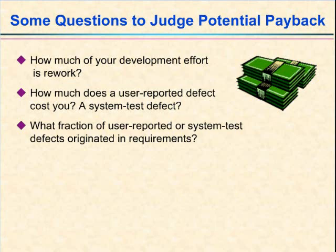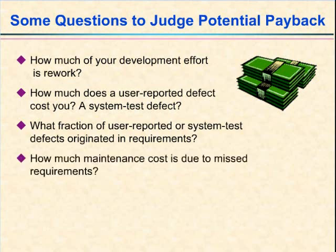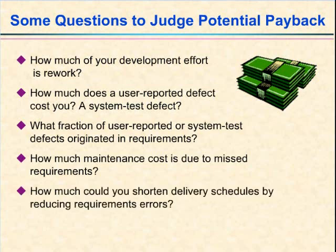Perhaps you'll learn that very few of your errors originate in the requirements, which would mean that improving your requirements doesn't give you much leverage for reducing defect costs. Without the data, you have no way of knowing for sure. You might also want to know how much of your maintenance effort is because of requirements that were overlooked during requirements development. Thinking through all these factors might give you an idea of how much your project teams could shorten their delivery schedules by reducing errors in requirements. Process improvement is all about understanding how you work today so you can think of better ways to work tomorrow.